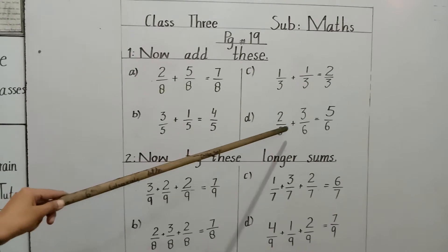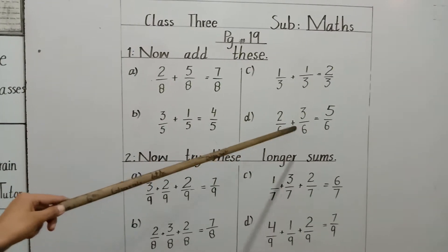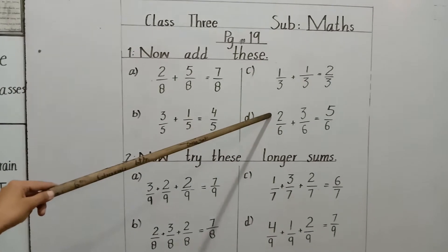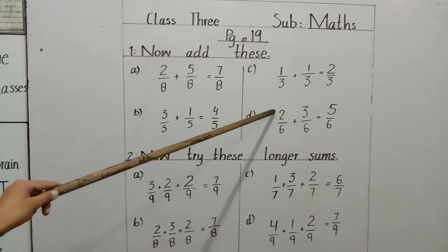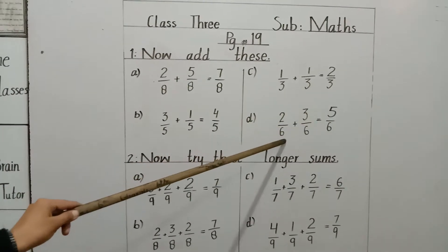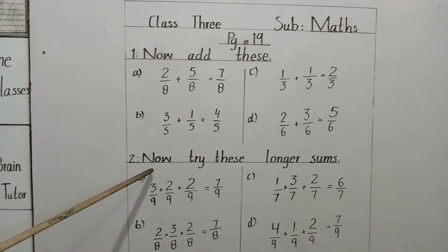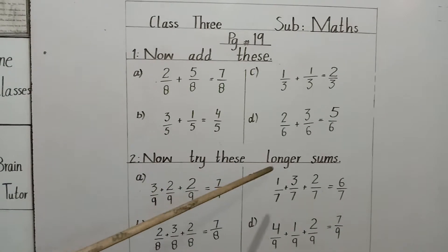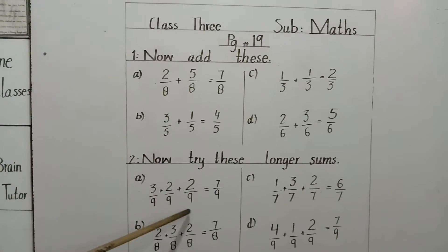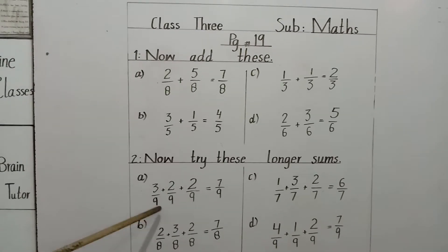2 by 6 plus 3 by 6 equals 5 by 6 because we will add numerators. Only 2 plus 3 equals 5 and 6 comes here also. Next question: now try these longer sums. Here 3 questions are present.